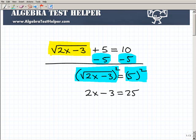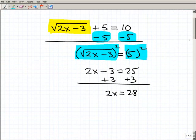All right, so we're almost there. Now we have a nice basic equation to solve, so I'm just going to go ahead and add 3 to both sides of the equation, and I get 2x is equal to 28. And then when I divide both sides of the equation by 2, I get x is equal to 14.